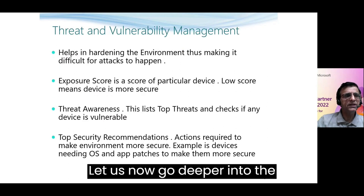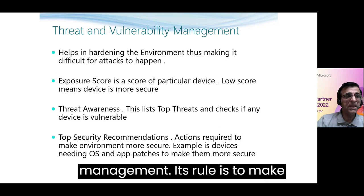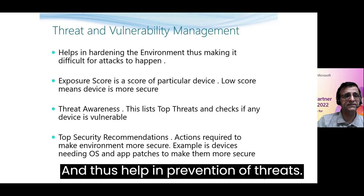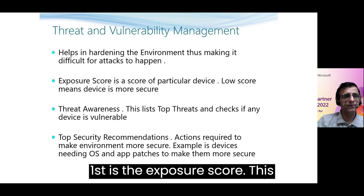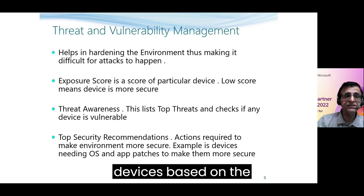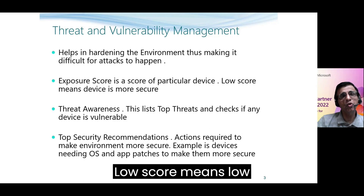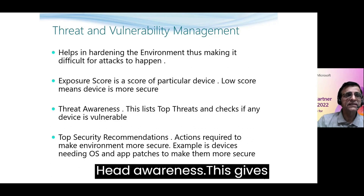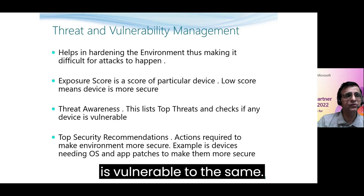Let us now go deeper into the first pillar: threat and vulnerability management. Its role is to make your environment more secure and thus help in prevention of threats. First is the exposure score — the score of all connected devices based on their device security configuration. A low score means low exposure to threats and better security. Threat awareness gives you the top threats floating around and checks if any enrolled devices are vulnerable to them.